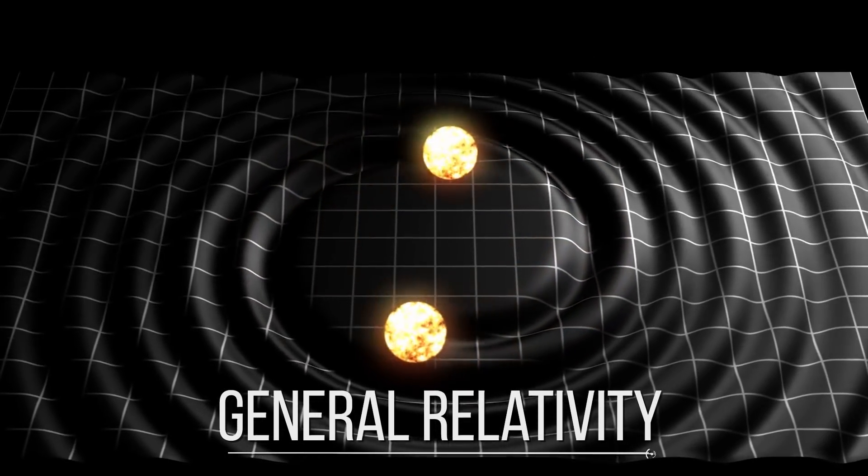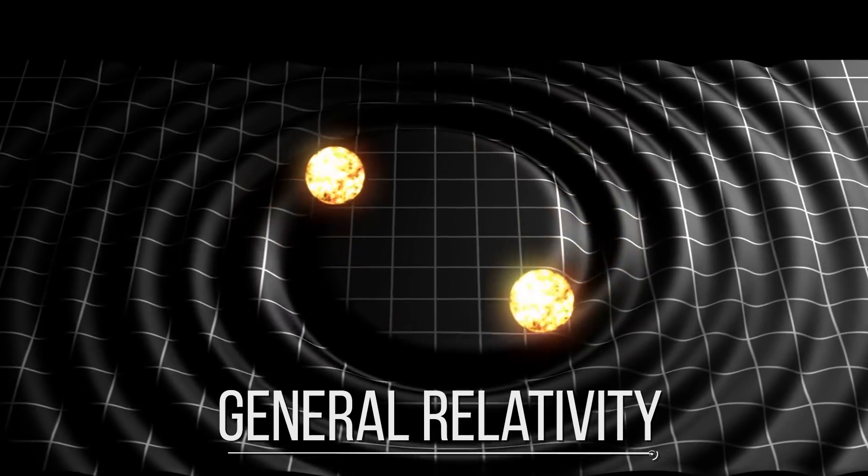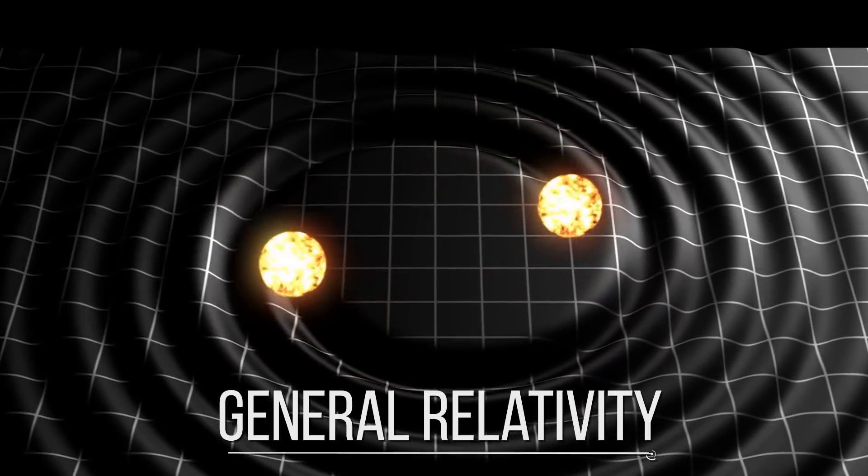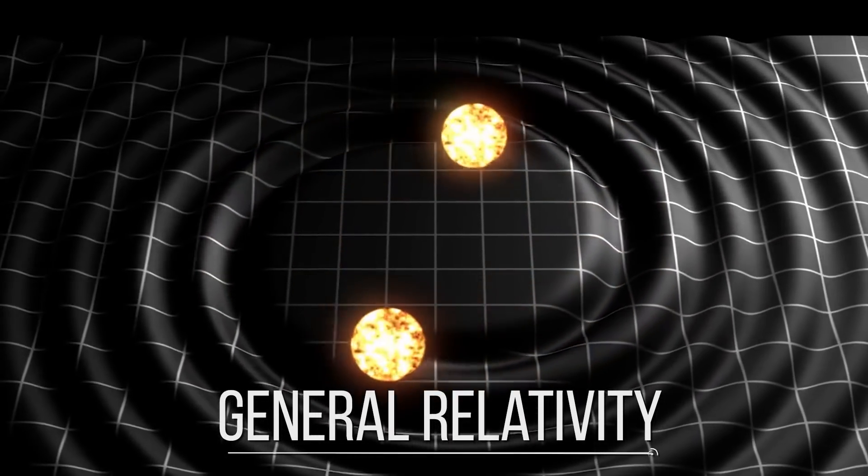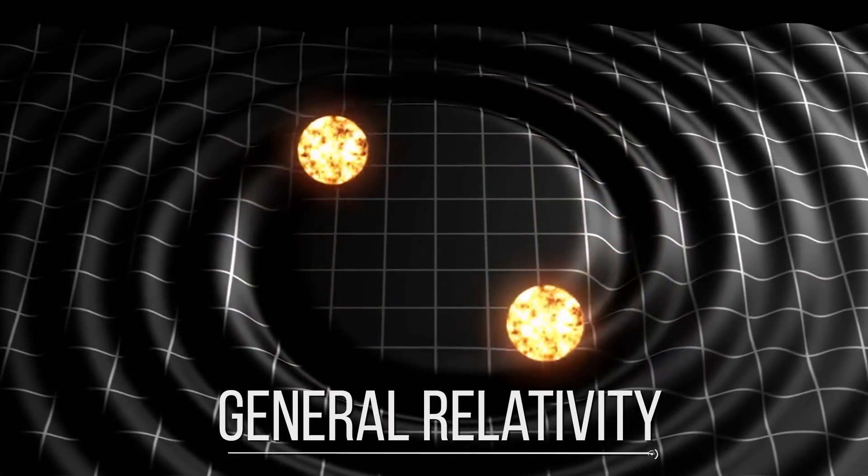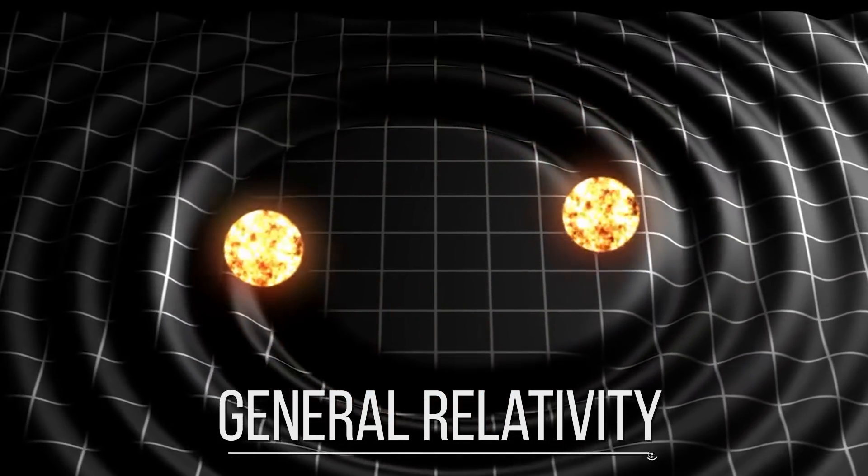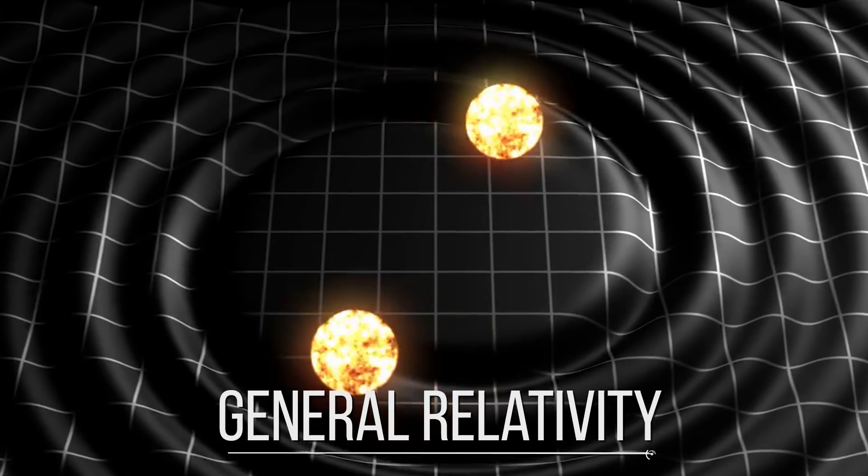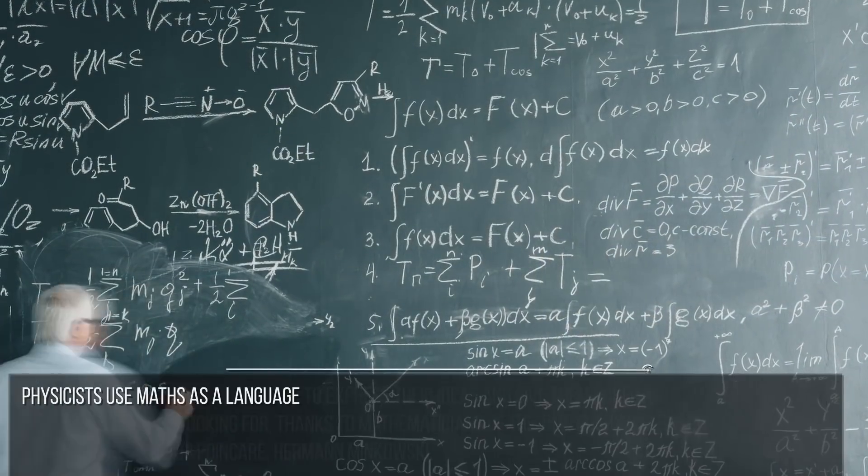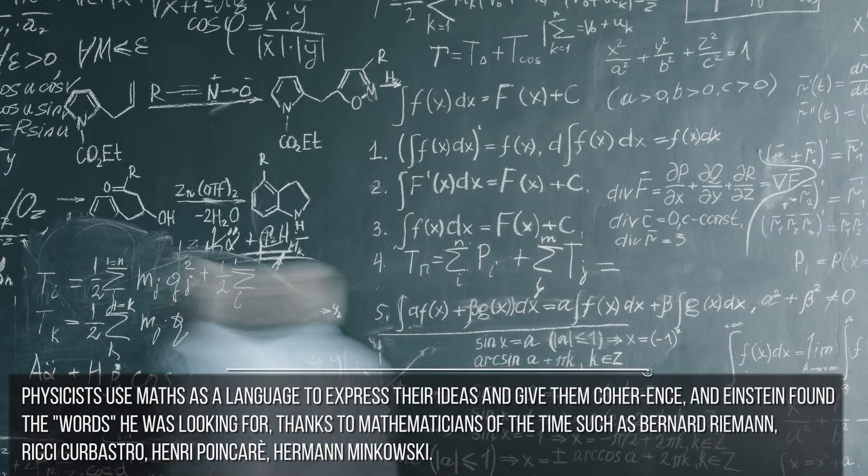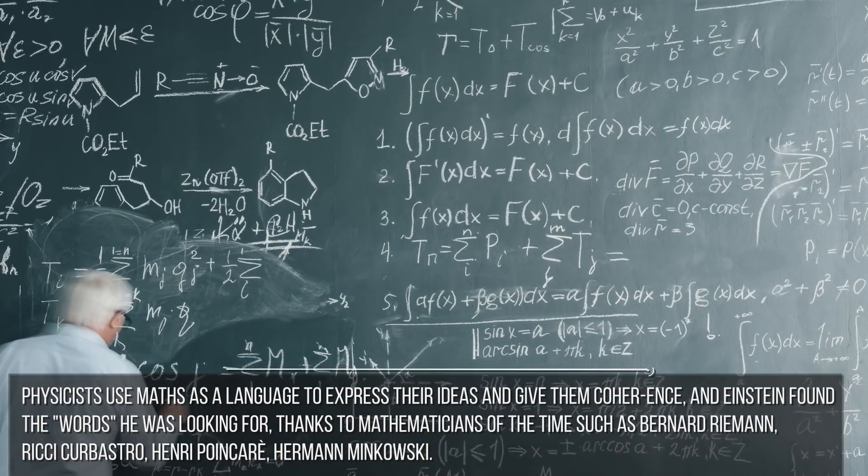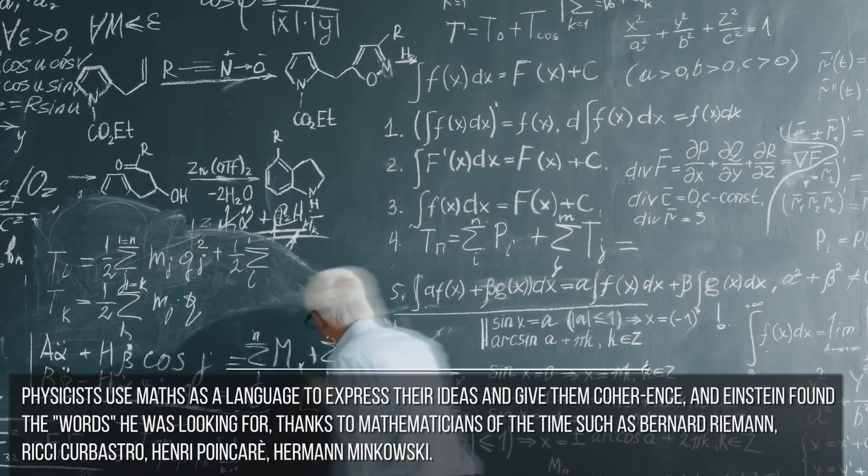After giving birth to general relativity, he declared that he already had all the theory clear in his mind but lacked the words to express it. Many people overlooked the fact that he was first of all a physicist, not a mathematician. That is different. Physicists use math as a language to express their ideas and give them coherence, and Einstein found the words he was looking for.